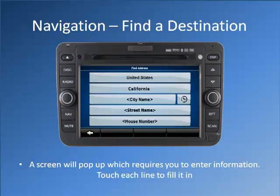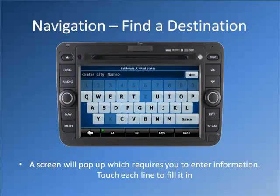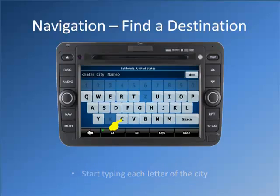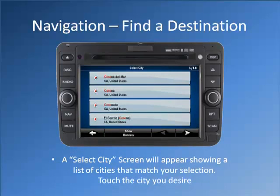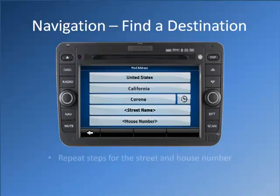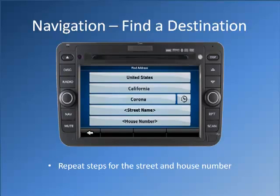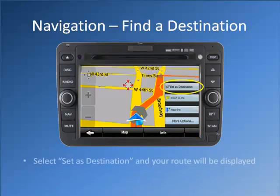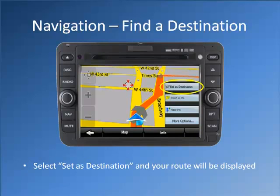A screen will pop up which requires you to enter information. Touch each line to fill it in. Start typing each letter of the city. A select city screen will appear showing a list of cities that match your selection. Touch the city you desire. Repeat steps for the street and house number. After you enter the house number, press Done and it will automatically take you to the map screen. Select Set as Destination and your route will be displayed.